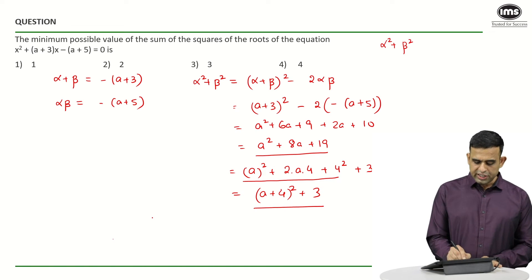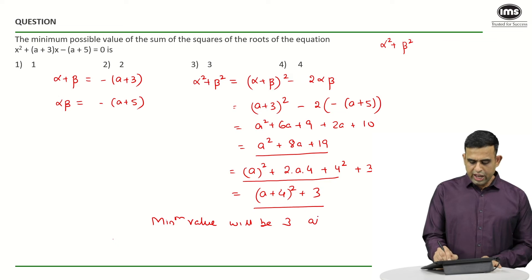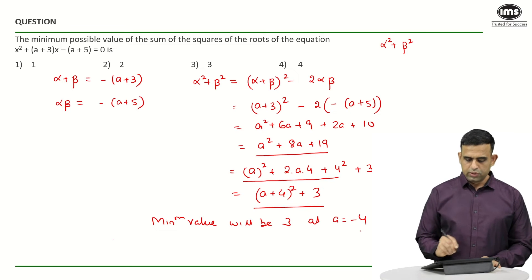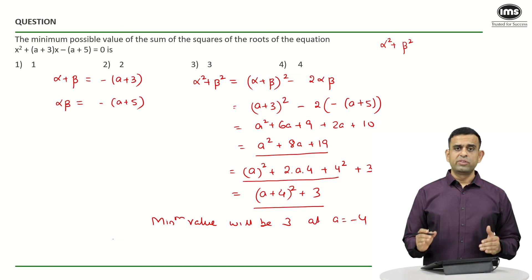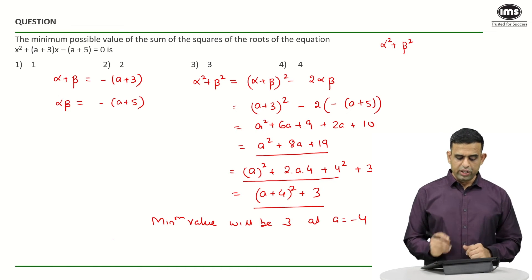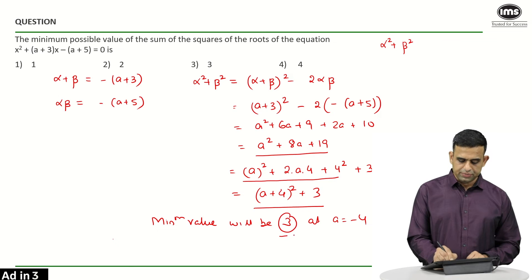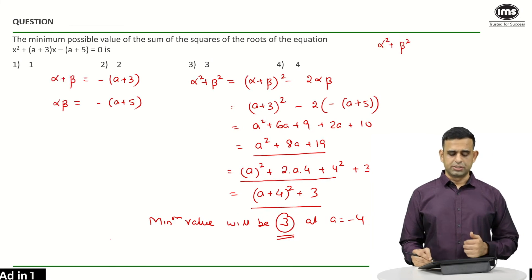So over here, one can say the minimum value will be 3 at a = -4. And my objective was to find out the least value of the expression and not the value of a. So my answer over here has to be nothing but 3 for this particular question.